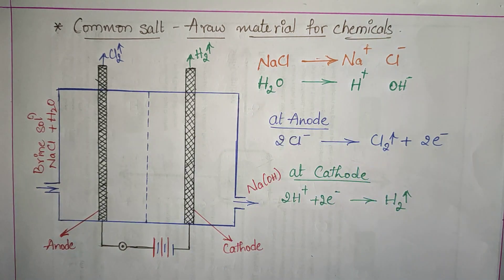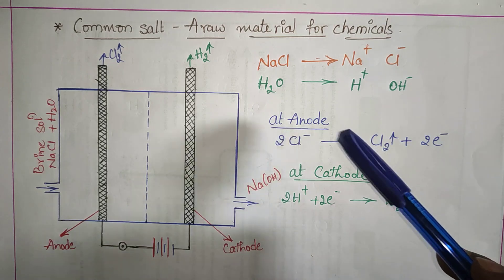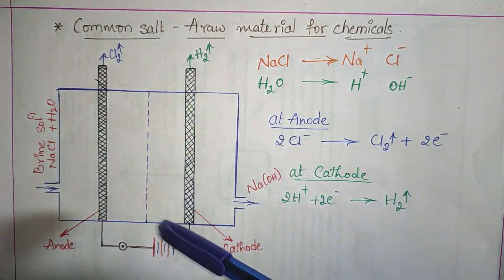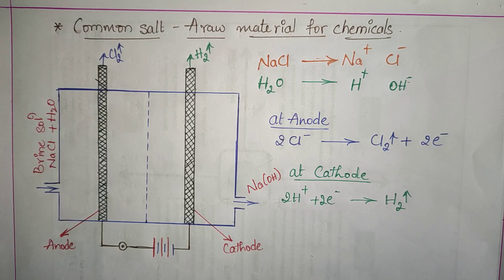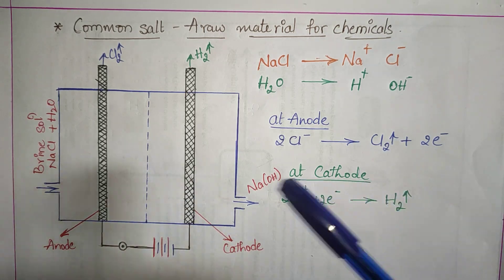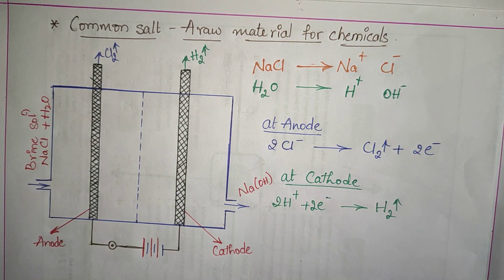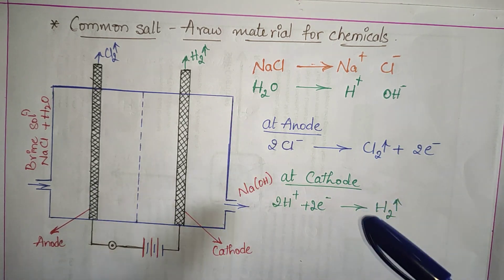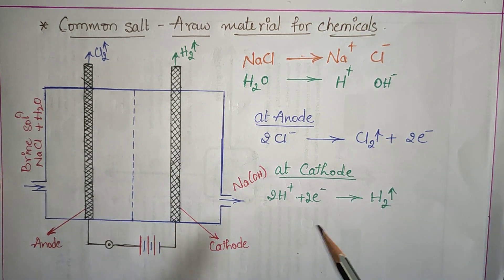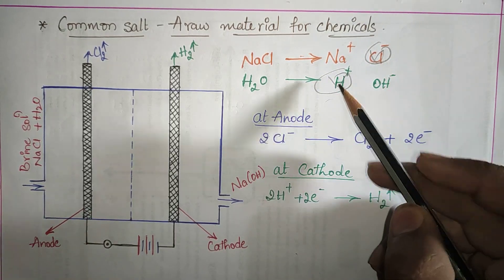At the anode, chlorine ions come to the anode and deposit there, giving up 2 electrons, so chlorine gas is liberated. At the cathode, hydrogen ions which have fewer electrons come to the cathode, receive electrons, and become stable hydrogen gas, which is liberated at the cathode.